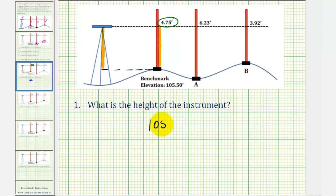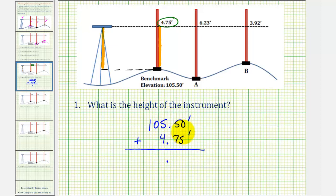So we'd have 105.50 feet plus 4.75 feet. When adding decimals, we want to line up the corresponding place values and the decimal point. Bring the decimal point down, then add from right to left. Zero plus five is five; five plus seven is 12, so we put a two in the tenths place and carry a one to the ones place. One plus five plus four is 10, so zero in the ones place and carry a one to the tens. We have a one in the tens and a one in the hundreds.